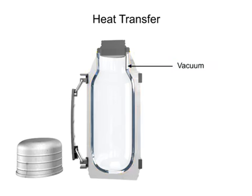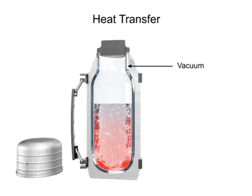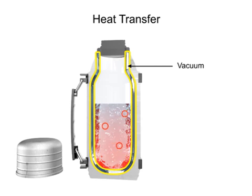In the case of a hot liquid, heat transfer by convection through the vacuum is greatly restricted due to the absence of air molecules necessary to facilitate the transfer of heat. The lack of physical contact between the inside and outside walls of the thermos due to this airless space also greatly inhibits the movement of heat by conduction.